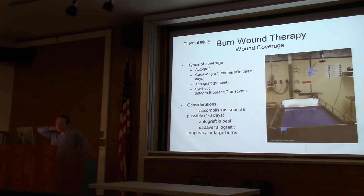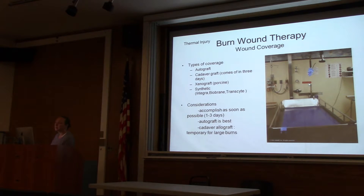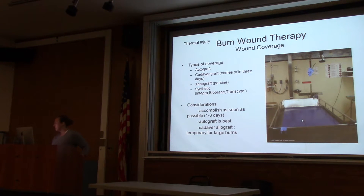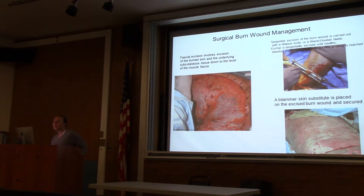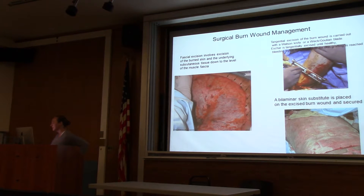Burn surgery can't be done at many hospitals because specialized equipment is required. This is a table at a burn unit — it's a very bloody surgery, with blood ready to hang as the operation begins. There's even a showerhead that washes blood off the bed at the end of the procedure. There is now a plethora of new dressings and other technologies available.